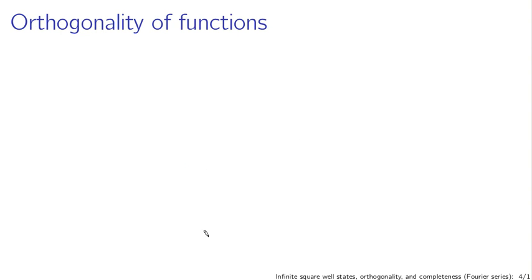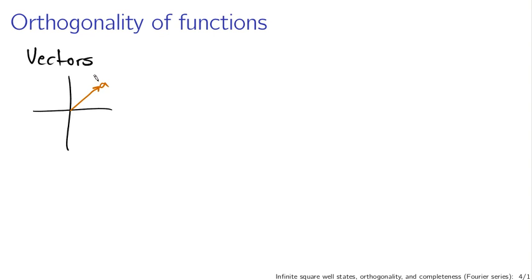So what does it mean for two functions to be orthogonal? Let's reason about this from a perspective you're more familiar with: the orthogonality of vectors. We say two vectors are orthogonal if they're at 90 degrees to each other. In higher dimensions, it's more convenient to define orthogonality in terms of the dot product. We say two vectors are orthogonal if the dot product of those two vectors is zero.